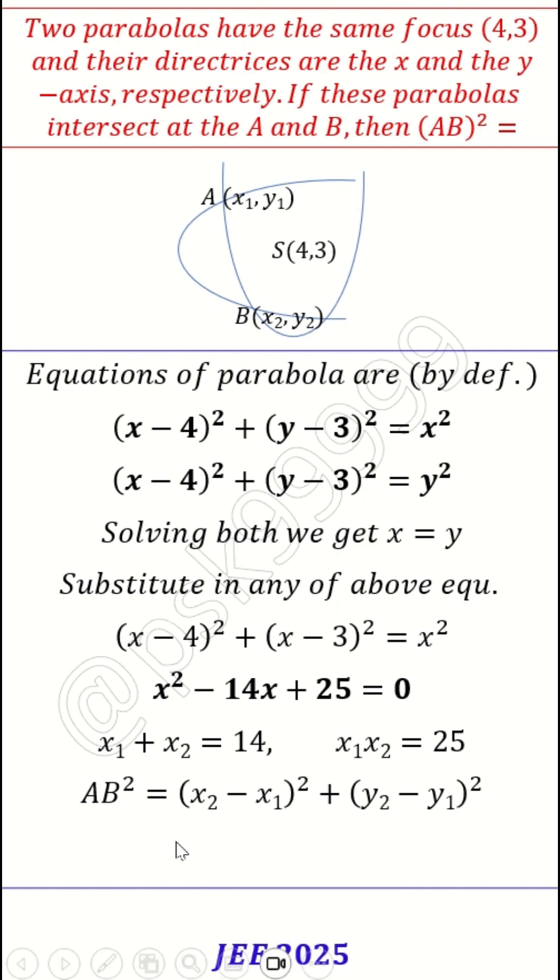So I can say that AB square is nothing but two times x2 minus x1 whole square. I can write x2 minus x1 whole square as x1 plus x2 whole square minus 4x1x2, which is 14 square minus 4 into 25. That is, AB square is 196. That's the answer.